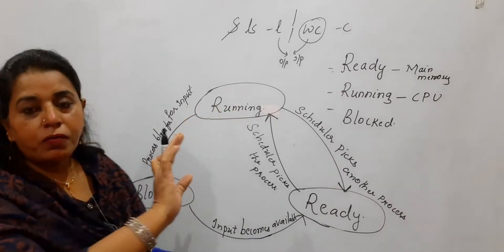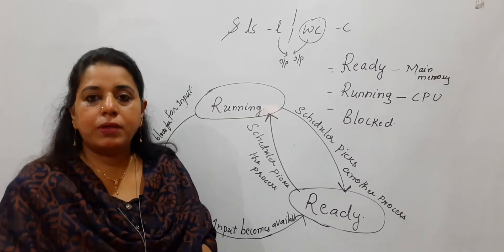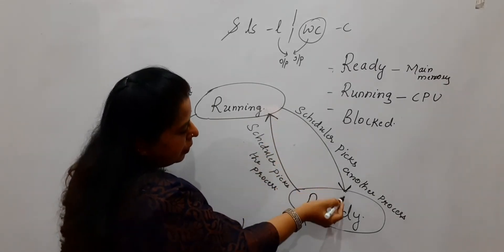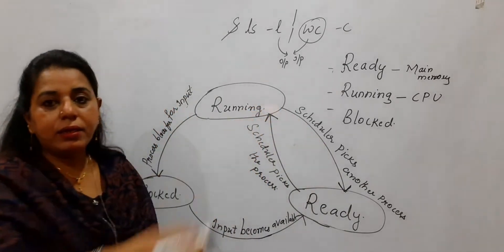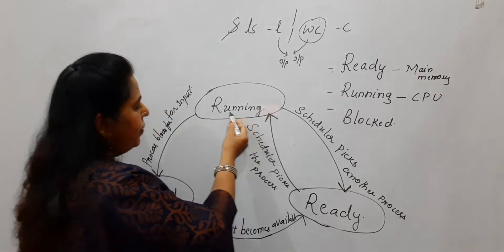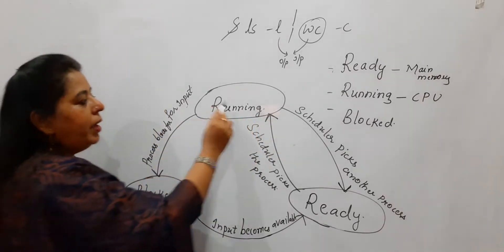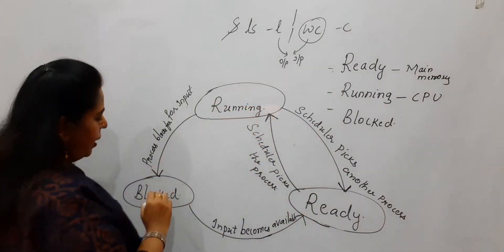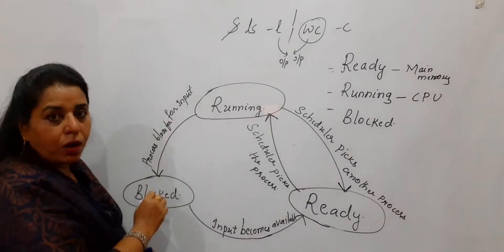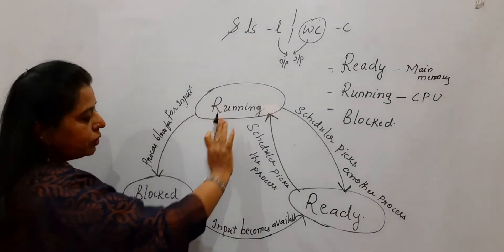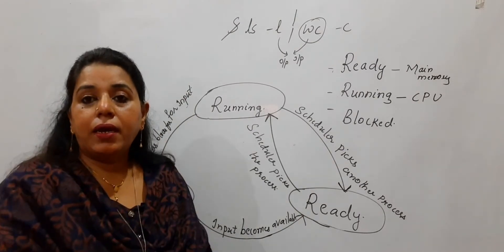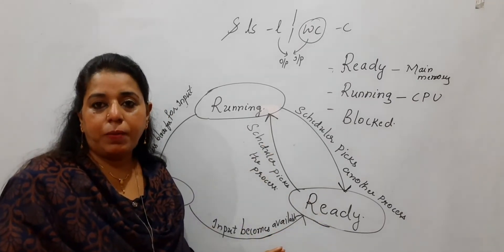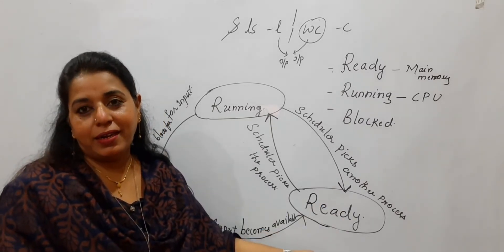When a process is in the block state, the CPU is idle. The scheduler picks another process from the main memory and allocates it to the CPU for execution. Whenever a process makes an I/O request it is blocked, and meanwhile another process can be given to the CPU. Once the blocked process gets its input, it is moved back into the main memory — it enters the ready state again — and this cycle starts again: from ready, to running, to block, and back.